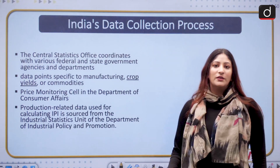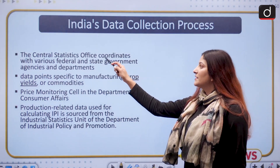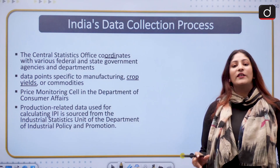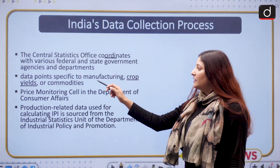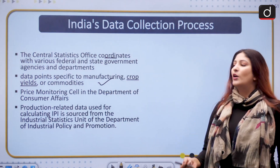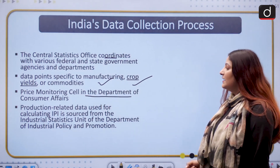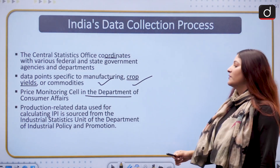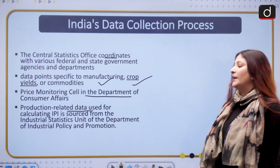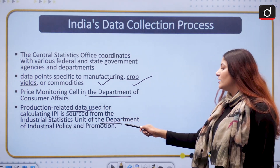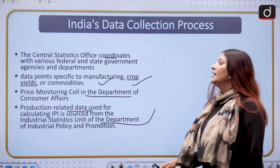The Central Statistical Office coordinates with various state governments, union government, and different agencies in order to collect data. Data points specific to manufacturing, crop yields, or commodities are collected with the help of the price monitoring cell in the Department of Consumer Affairs under the Ministry of Consumer Affairs. Production-related data used for calculating the IPI is sourced from the Industrial Statistics Unit of the Department of Industrial Policy and Promotion under the Ministry of Commerce and Industry.